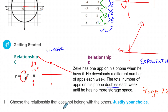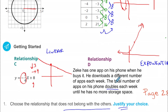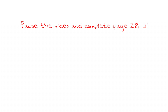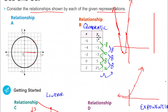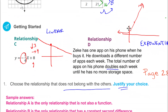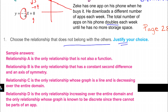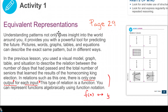Your job: choose the relationship that does not belong with the others and justify your choice. Here are some answers: relationship A is the only one that's not a function. Relationship B has that constant second difference shown in the table. Relationship C is a line and it's decreasing — the only one that's decreasing. Relationship D is increasing over the entire domain and is discrete, meaning single points not connected with a line. Any of those rationales work, but I kind of favor relationship A as being the most clearly different.